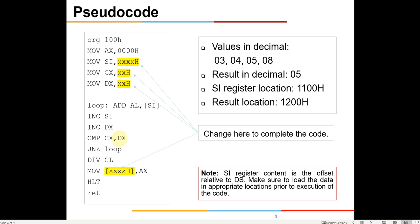You increase SI and compare CX and DX. This program is written slightly differently — you could use CX itself as a counter, but just to give you a little exposure to the compare command, this program is written this way. You are increasing DX and we can use CX itself as a counter by using a loop statement, but this is written in a different manner just to give you a feel of how the compare function works. It keeps increasing the value of DX and compares with CX; when they become equal it jumps out of the loop. Once you come out of the loop you divide by CL.